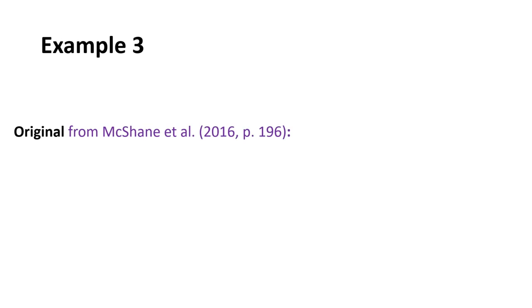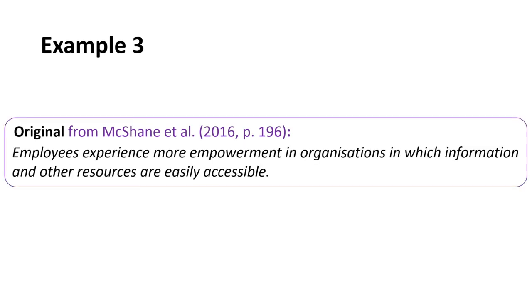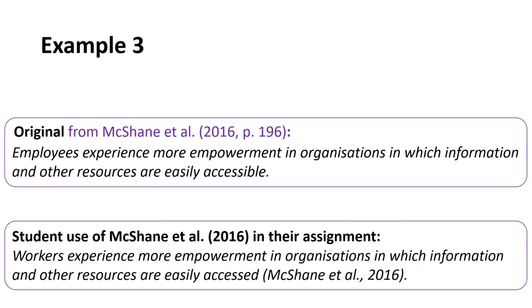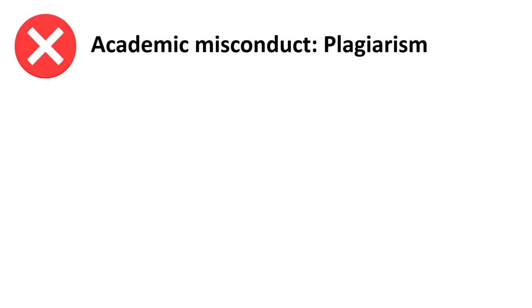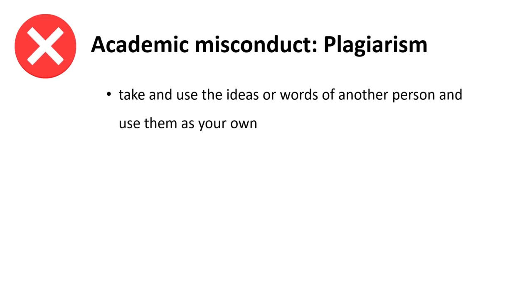Example three: for an assignment, a student writes an essay that includes a reference to McShane et al. 2016. The student has changed one word at the beginning of the sentence and switched the form of one word at the end of the sentence, but the rest of the sentence is the same as in the original. This is academic misconduct because it is plagiarism. Plagiarism is when you take and use the ideas or words of another person and use them as your own.